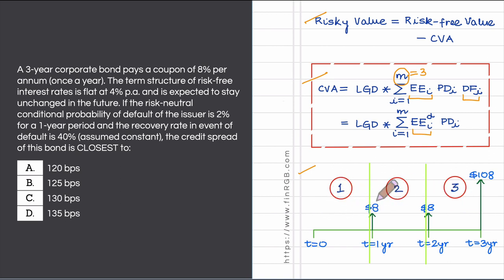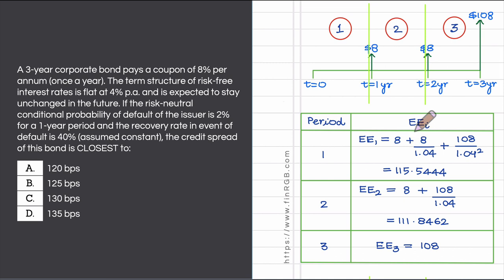Now, for each of these three sub-intervals, let us compute the inputs that go into the CVA formula, beginning with the expected exposure. Since we assume interest rates do not change during the life of this corporate bond, if I place myself at any point in the future, the future value of this corporate bond — assuming no default — can be easily computed.